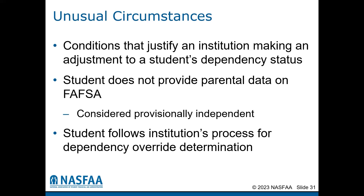In these situations, the student will not provide parental information on the FAFSA and will be considered provisionally independent. An estimated student aid index, or SAI, will be calculated, but the student will need to follow the school's process for verifying the dependency determination.